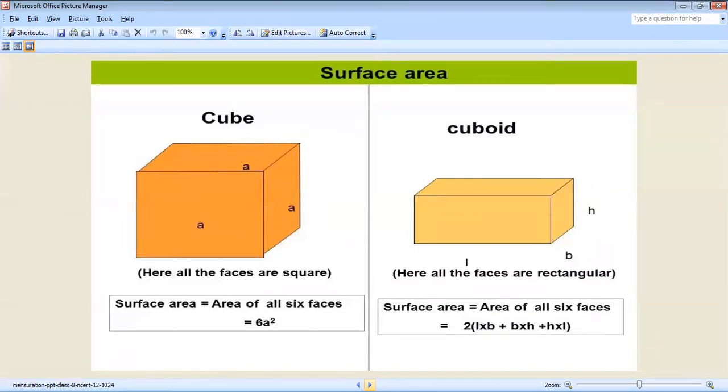Cuboid - here all the faces are rectangular. Surface area is equal to area of six faces: 2(lb + bh + lh).